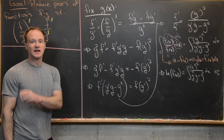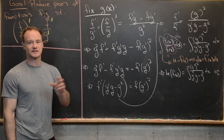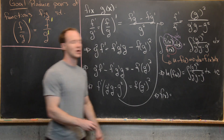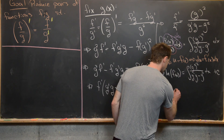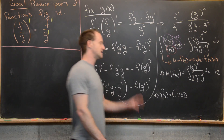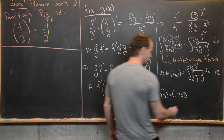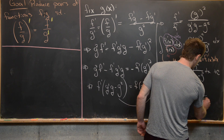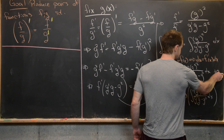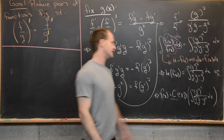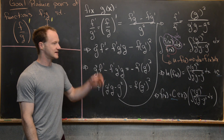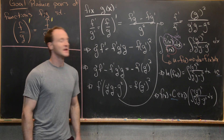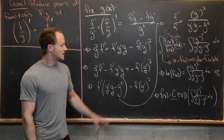We can solve for f of x by exponentiating both sides, keeping in mind that adding the constant turns into multiplication by a constant. So f of x equals C times exp of the antiderivative of g prime squared over (g prime times g minus g squared) dx, where uppercase C equals e to the lowercase c.